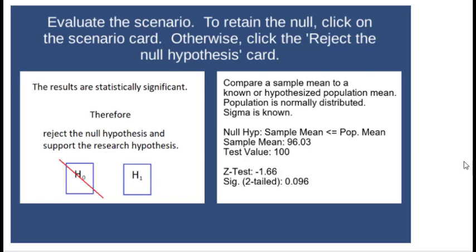What I'm about to share with you works for both a z-test or a single-sample t-test. So for this particular scenario, let's say we're comparing a sample mean to a known or hypothesized population mean. Population is normally distributed, sigma is known. So that's why we'd normally be doing a z-test in this case.